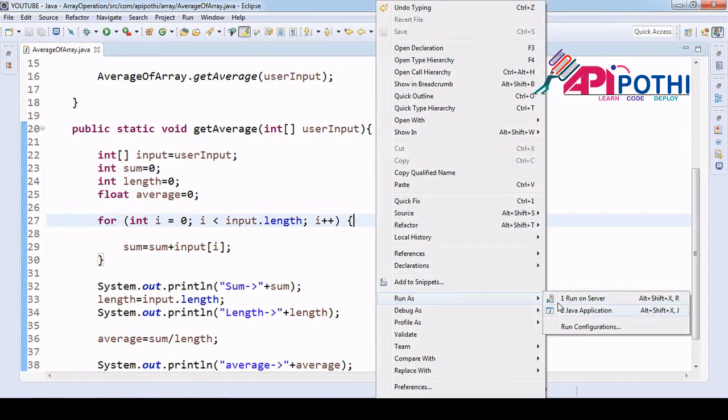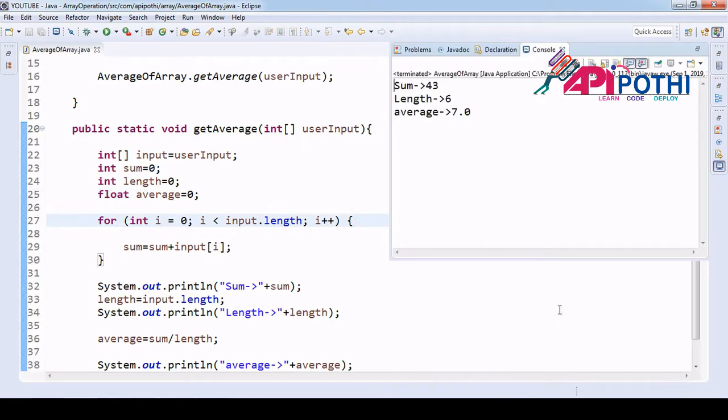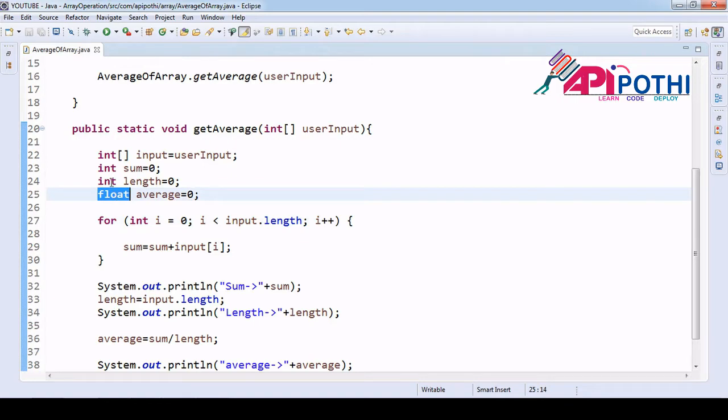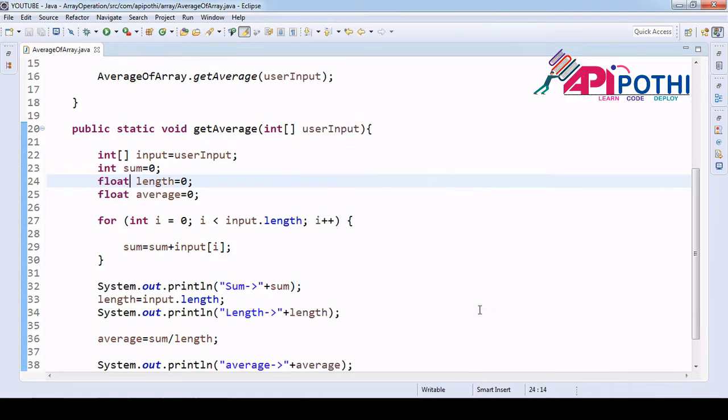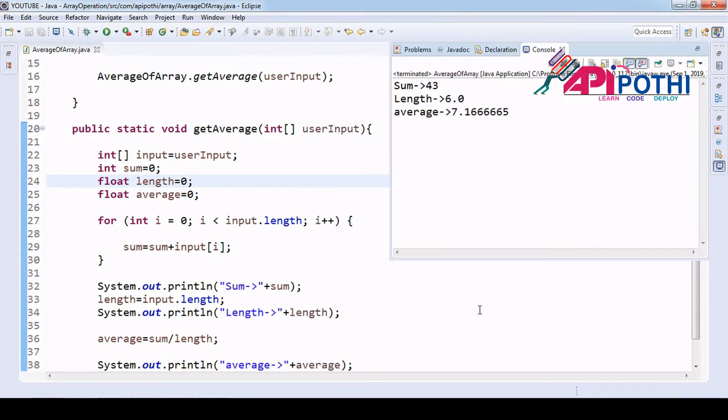Now if you run, you will get the exact decimal point. Why am I not getting the exact decimal? So you can run the application. Yeah, now you are getting average as 7.1.